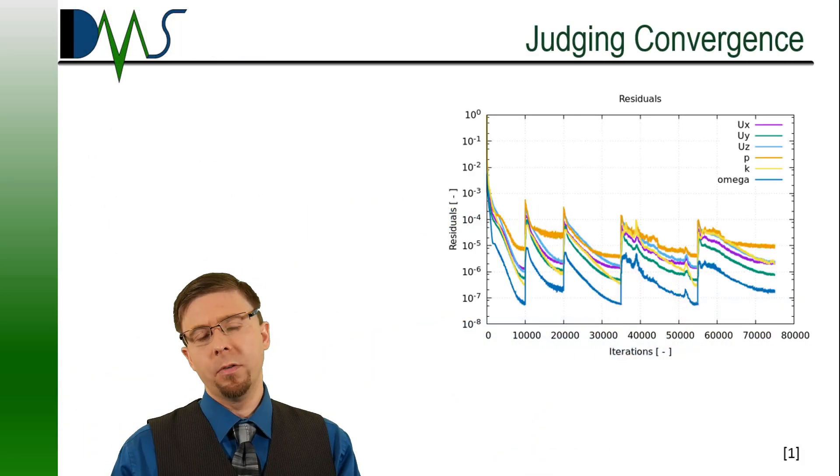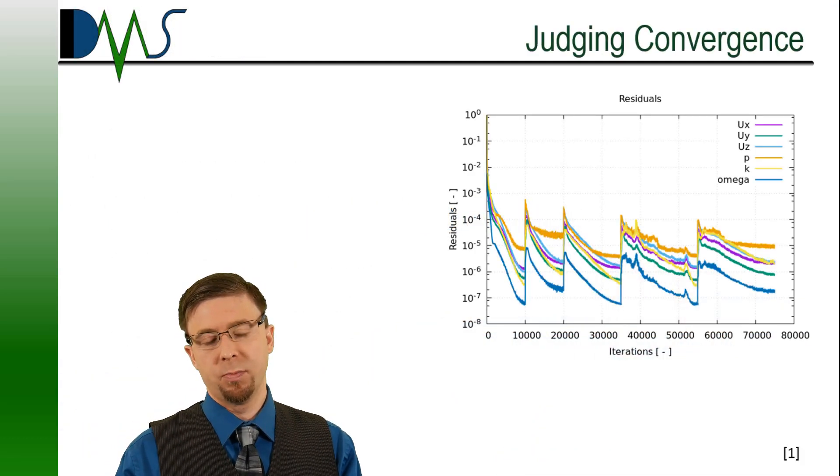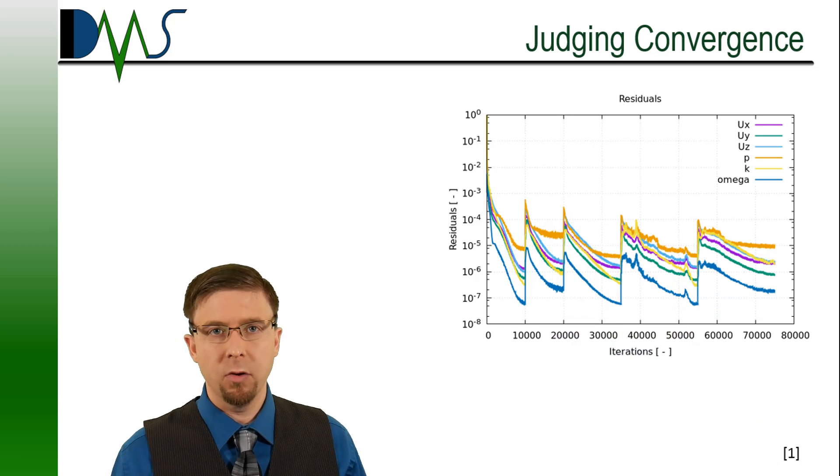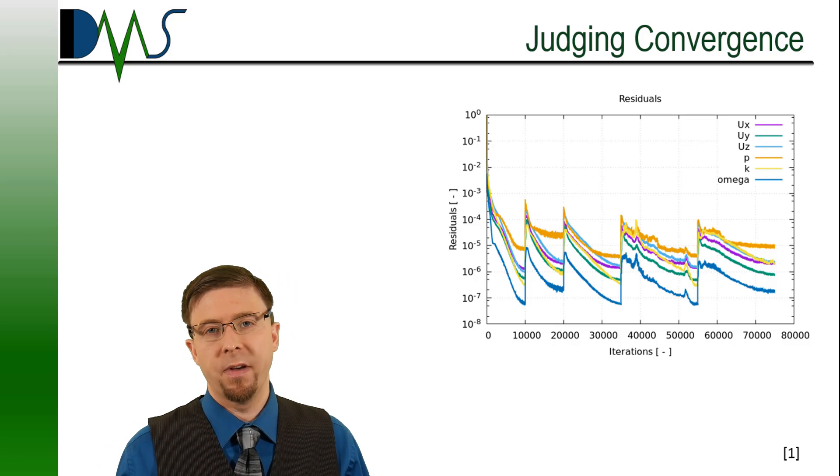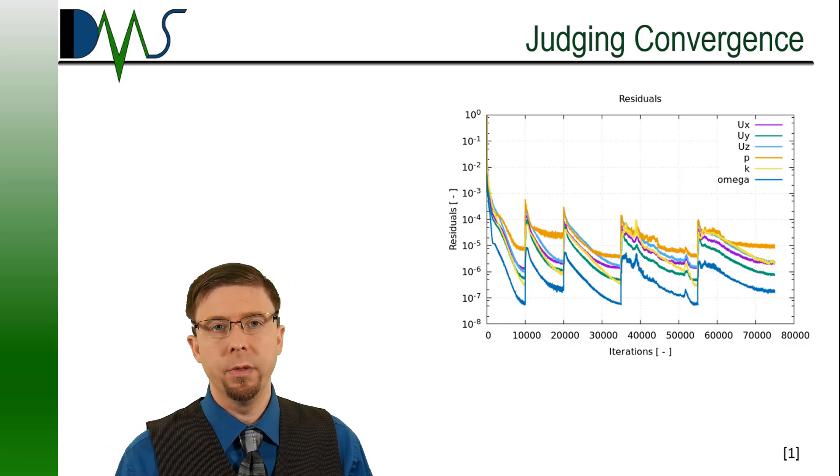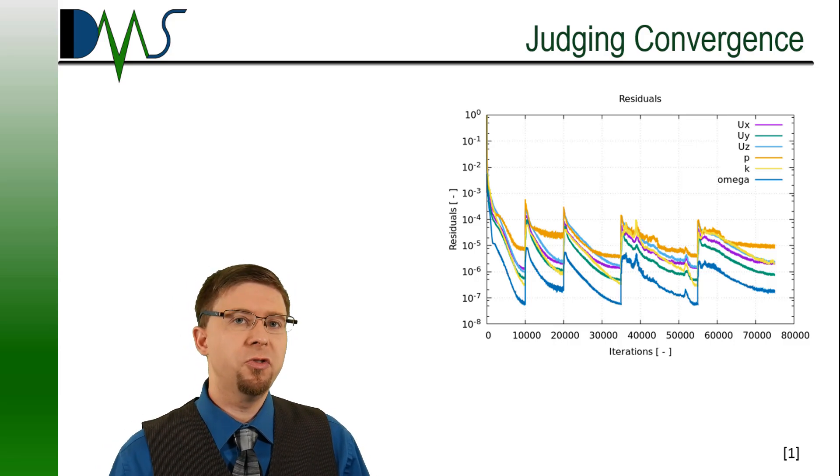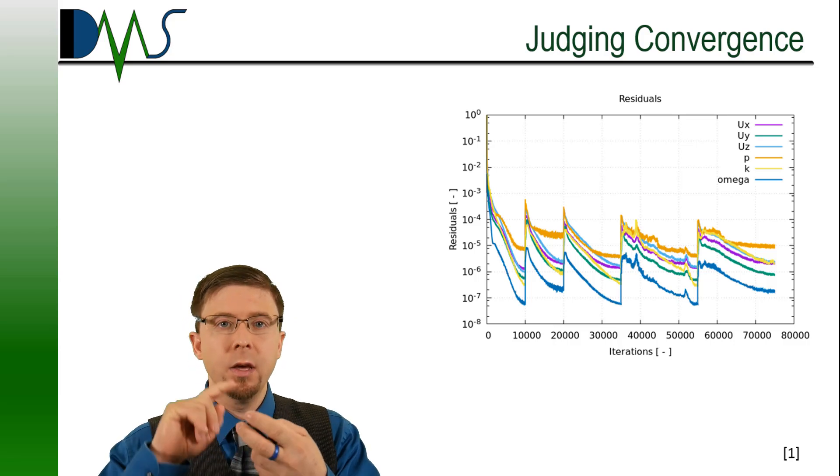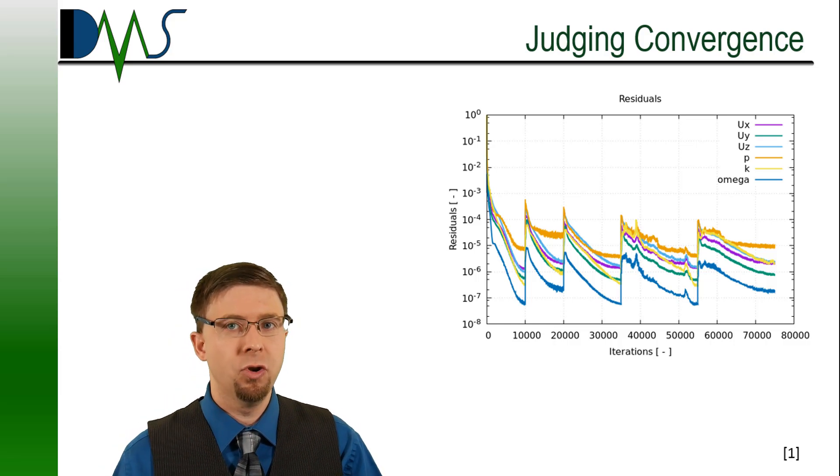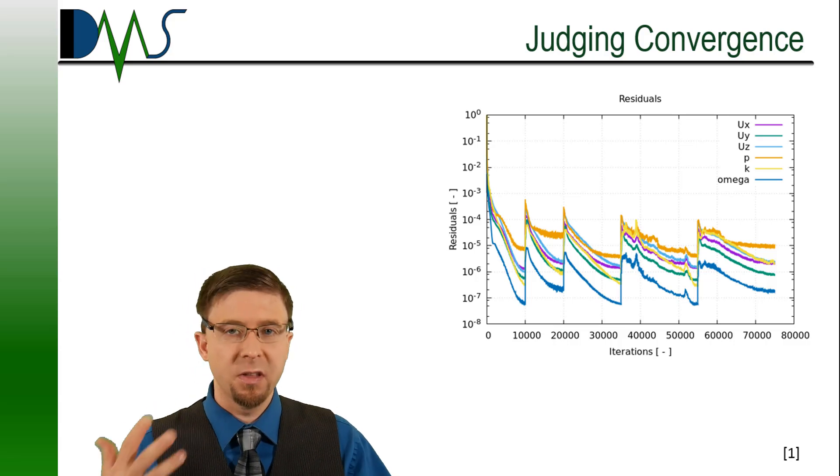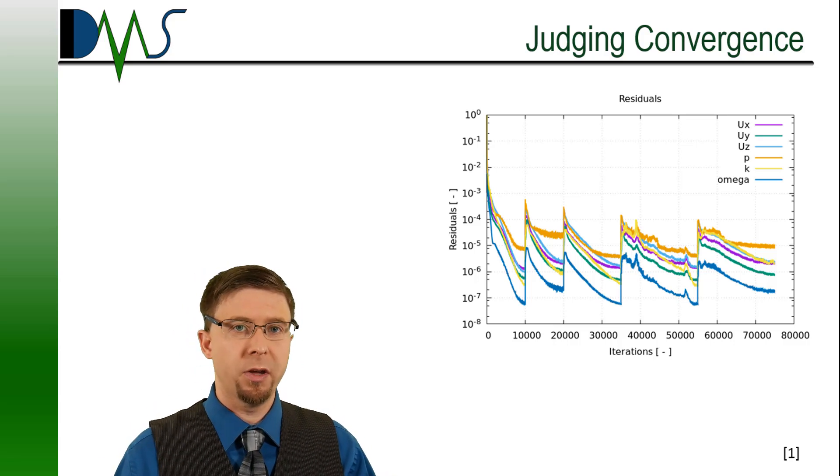The primary tool for judging convergence is the residuals plot. But that's not the only thing that you're going to use. You're actually going to build up a preponderance of evidence. You're actually going to use your residuals plot, you're going to create monitors, and you're going to check your flow patterns. All of these are going to build a consensus to really judge whether or not you're converged.